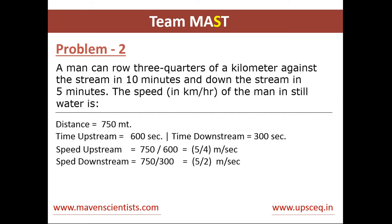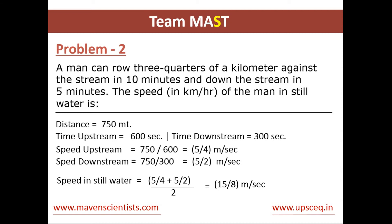We calculate the speed upstream and downstream: 750 divided by 600 gives 5/4 meters per second for upstream, and 750 divided by 300 gives 5/2 meters per second for downstream. Now, the speed of the boat in still water equals the speed upstream plus the speed downstream, divided by 2. We covered how this formula was derived in the previous video — part 1 of boats and streams. This gives us 15/8 meters per second for the speed in still water.